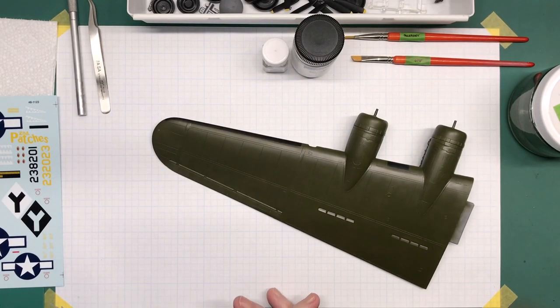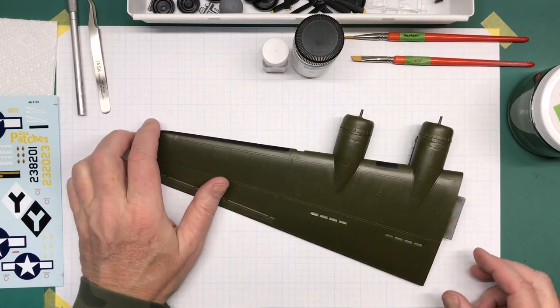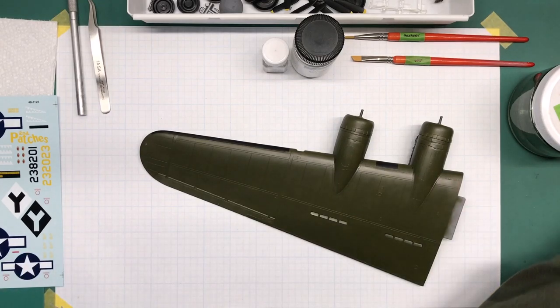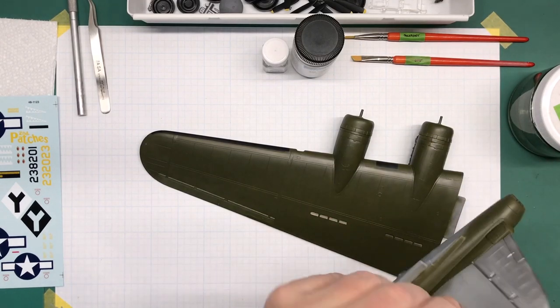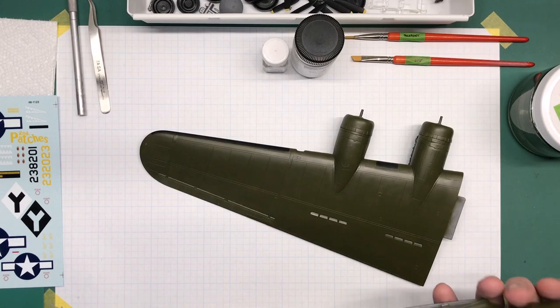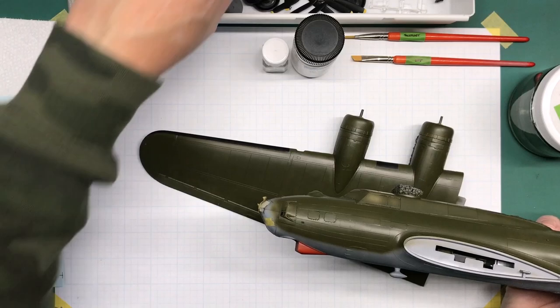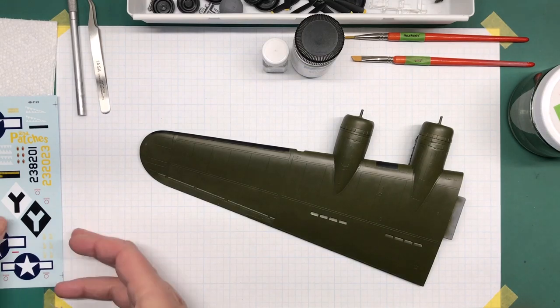So I got all the painting finished, including the detail painting. I painted the formation lights, whatever other kind of lights there are on this thing. I got the tail painted in the appropriate metal finish. I got the chin turret painted. That is ready to go.